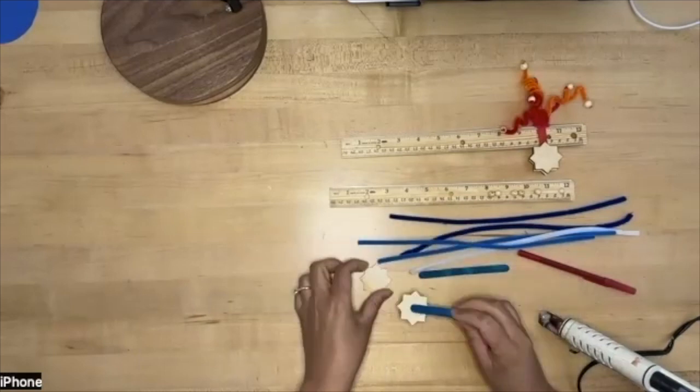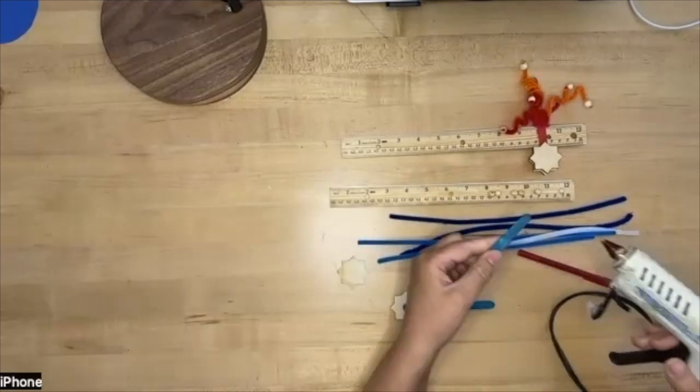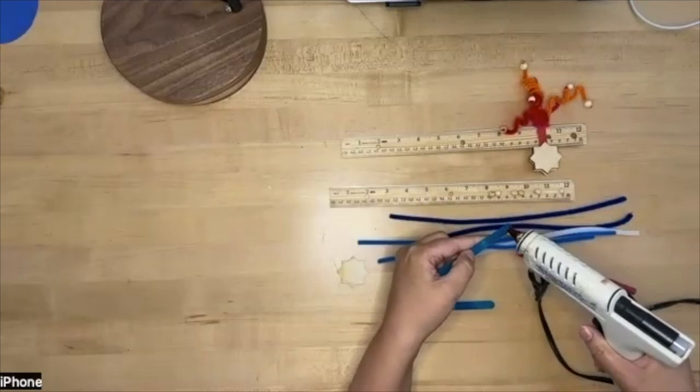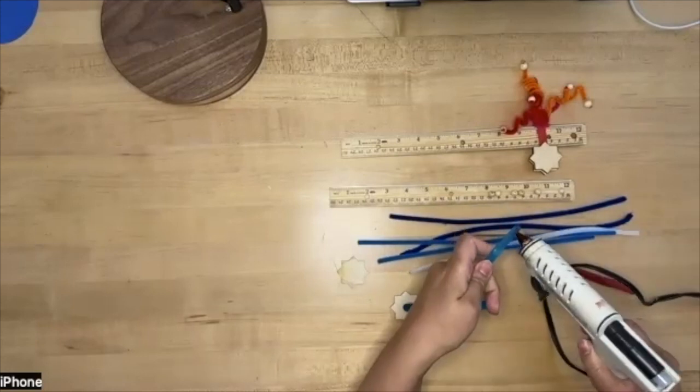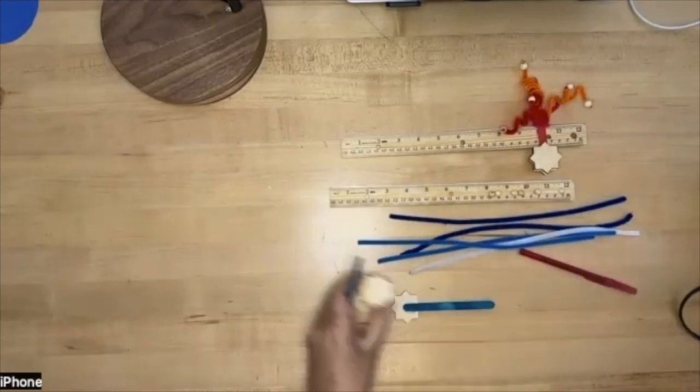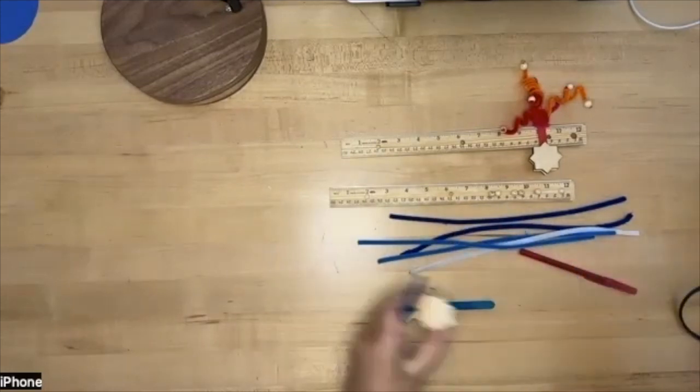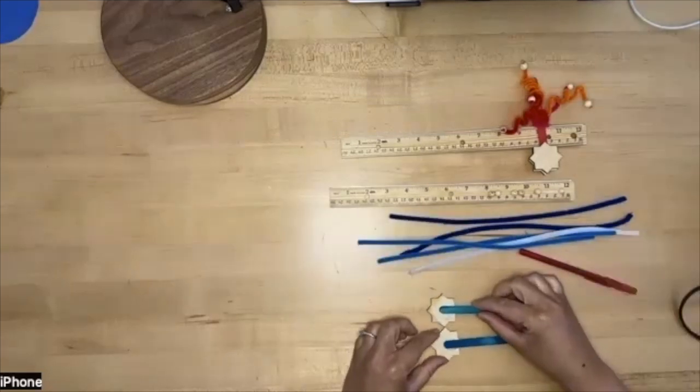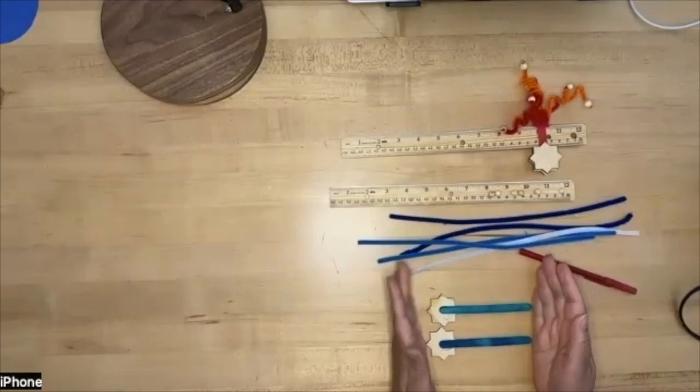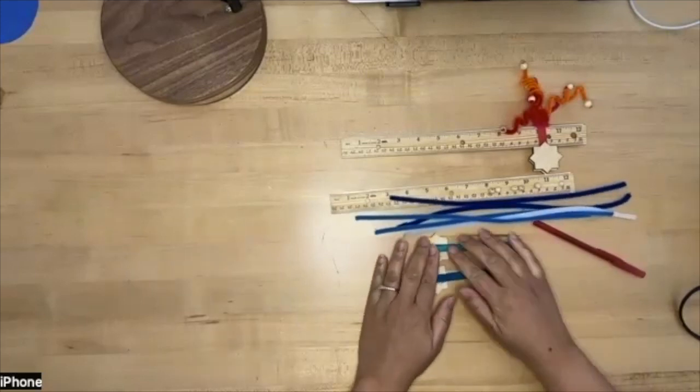So we're going to do a popsicle stick. We're going to just put a bit of glue on back of this as well. And then we're going to glue it on the back like that. You want to kind of line them up so the length is about the same.